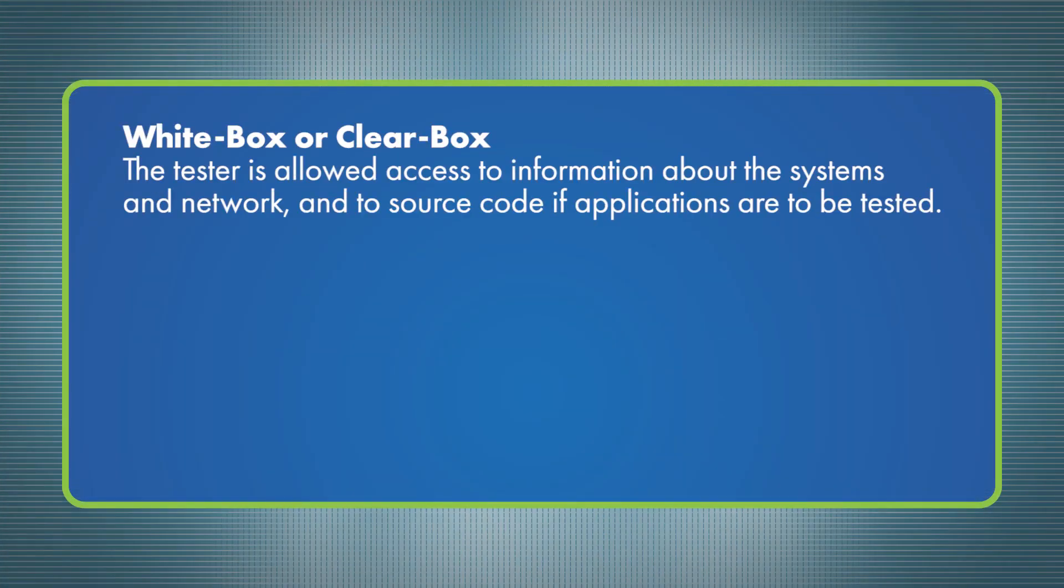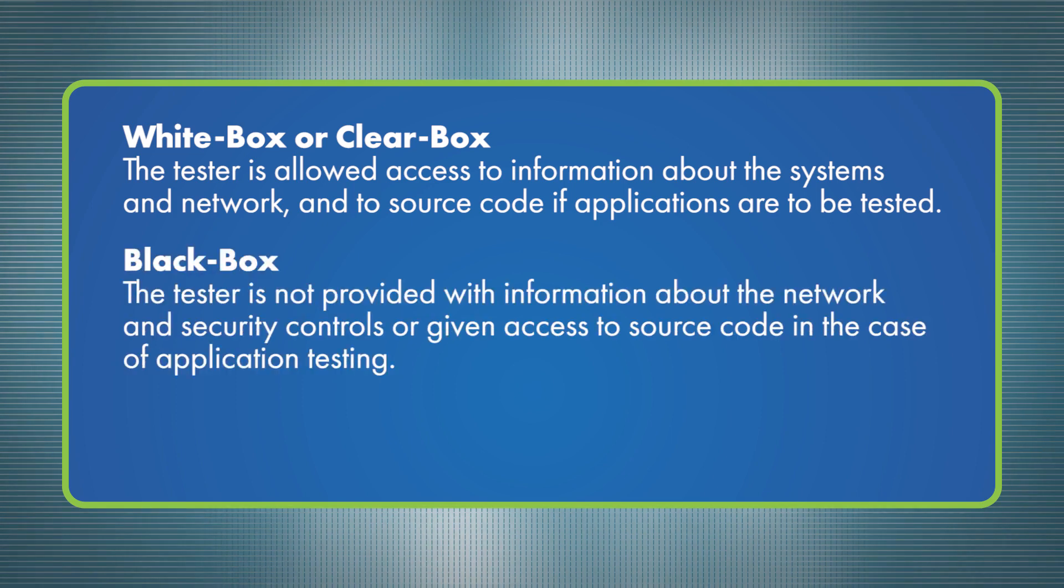Whether you run a comprehensive test or check internal or external threats, a tester will need to know the extent of the network and will need to have some system-specific information before testing can occur. White box or clear box testing is where the tester is allowed access to information about the systems and network and to source code if applications are to be tested. Whereas in black box testing, the tester is not provided with information about the network and security controls or given access to source code in the case of application testing. Finally, in gray box testing, the tester is only given limited information about the network.